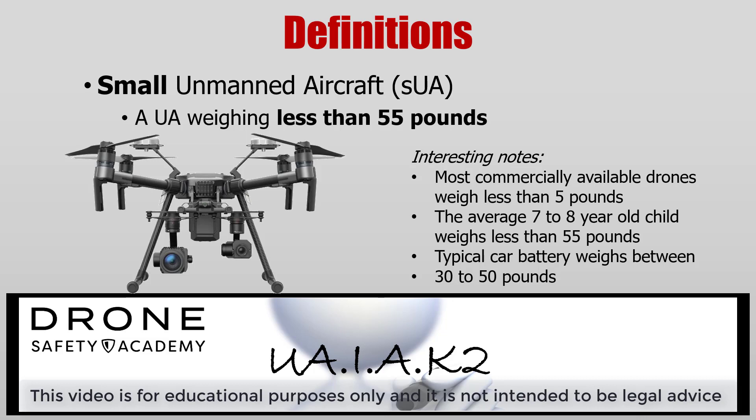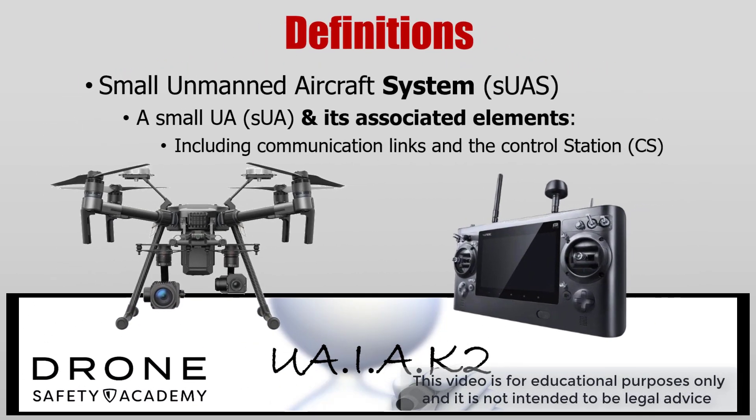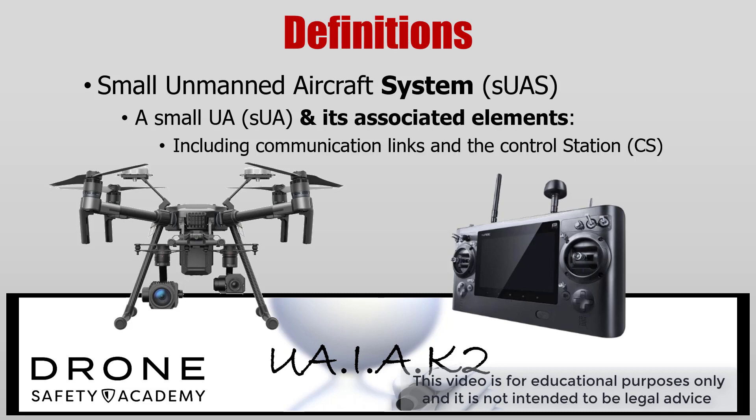Now we're going to talk about a small unmanned aircraft, which is based on the amount of weight. A small unmanned aircraft is an unmanned aircraft weighing less than 55 pounds. For comparison: most commercially available drones weigh less than five pounds, the average seven to eight year old child weighs less than 55 pounds, and a typical car battery weighs between 30 to 50 pounds.